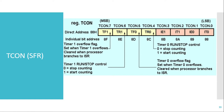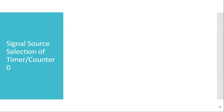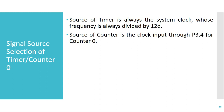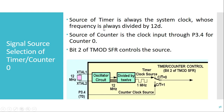Next is the signal source selection for Timer 0. There are two paths for providing the clock to Timer 0. The clock source selected as input is decided by the C/T̄ bit in the TMOD SFR. If this bit is 0, the timer acts as a timer, and the CPU clock generated using the crystal is given as input to the timer.